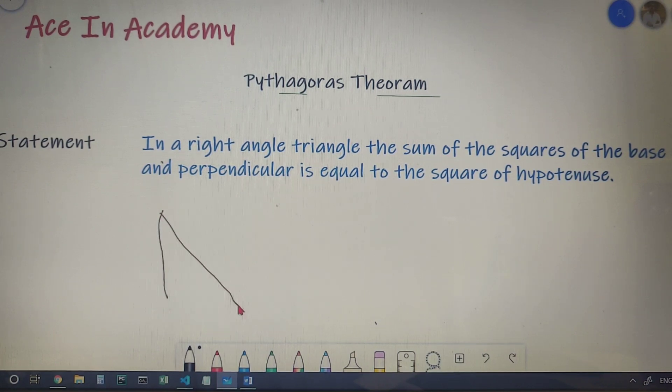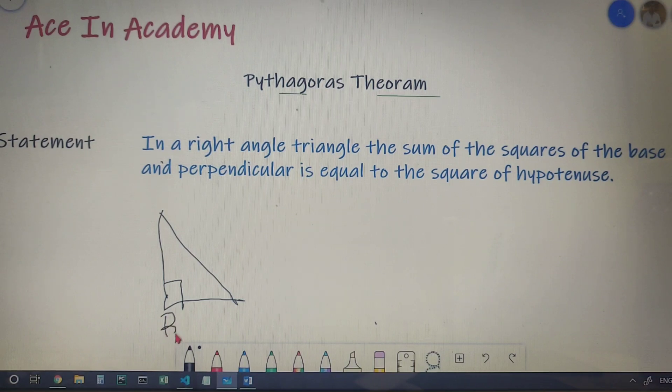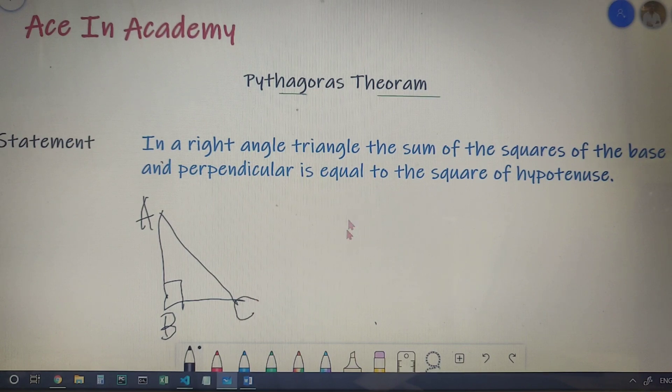If you have a triangle that is right angle at the vertex B, and the other two vertices are A and C, then I can say that AB square plus BC square equals AC square.